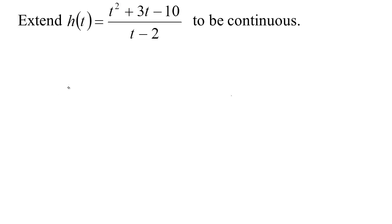If a function is undefined at a point but we have a limit at that point, we can make it continuous. If you look at this function h, it's the ratio of two polynomials. All polynomials are continuous, so this is going to be continuous as long as the denominator is not zero. So our function just has a little trouble here at two — everywhere else it's continuous.